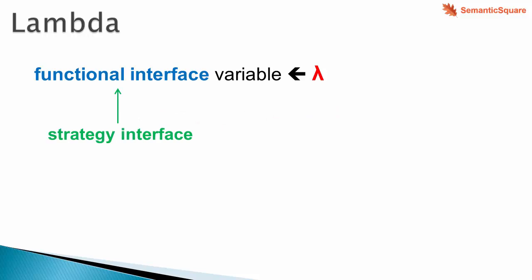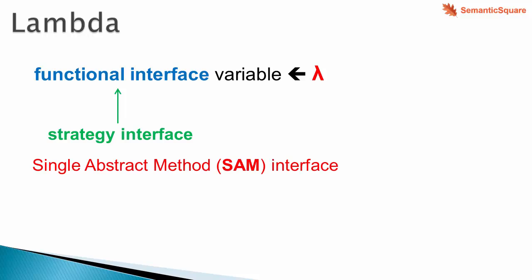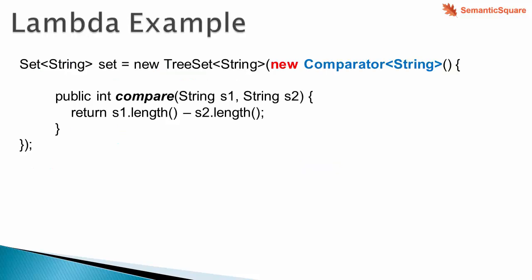When discussing anonymous classes, we said that a functional interface can be used to define a strategy interface, and the different anonymous classes implementing that interface would serve as the different strategies. Similarly, we can now have different lambda expressions acting as different strategies — that's a normal use case for lambda expressions. Since a functional interface has a single abstract method, it is also referred to as a SAM (Single Abstract Method) interface.